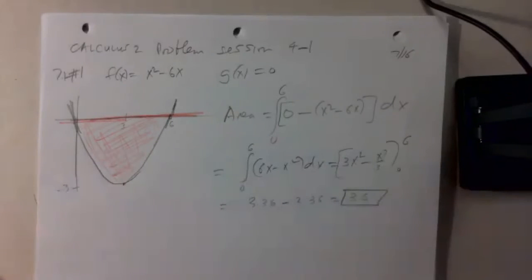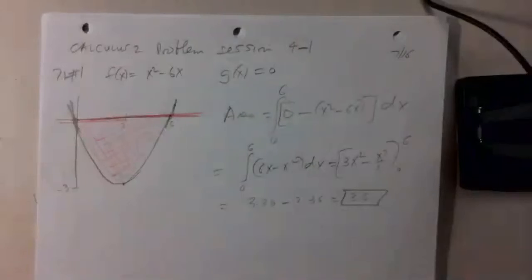Would it be the integral from negative 1 to 3? So again, our books are different. Tell me what your problem number 3 is. It's f of x equals x squared minus 4x plus 3, and g of x equals negative x squared plus 2x plus 3.